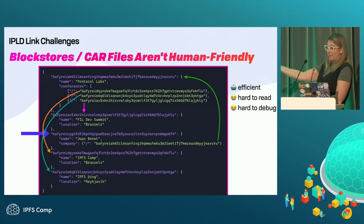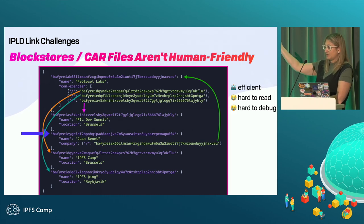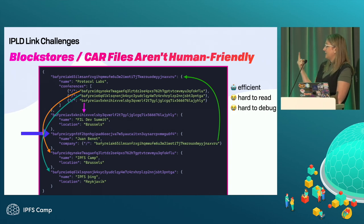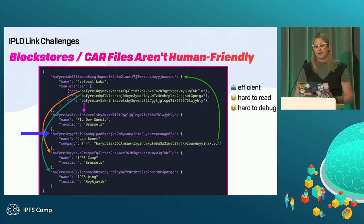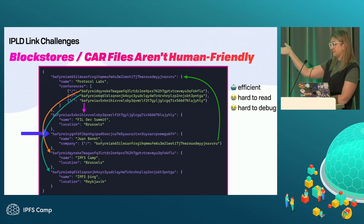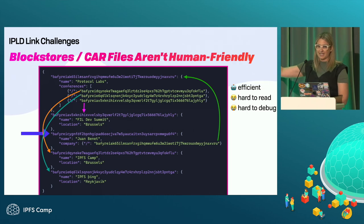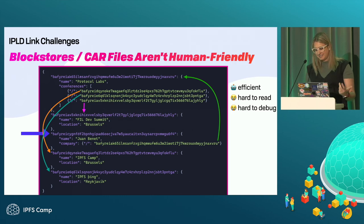The benefit of this format is it's very machine-efficient — a machine is very good at jumping around in a structure. But for humans, it's hard to read, hard to debug, and hard to write. It's effectively impossible — you have to calculate the CIDs for every step, it breaks up your flow, it's a bad time.